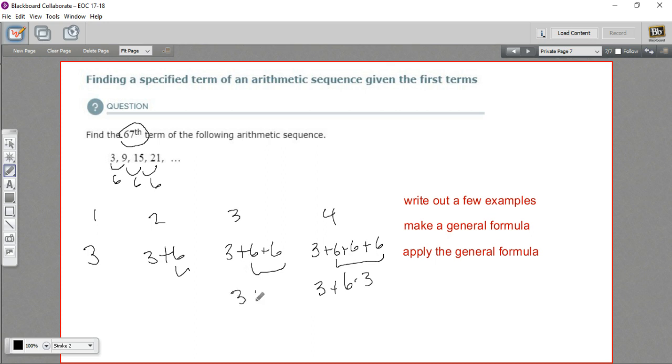This is really 3 plus 6 times 2. This is 3 plus, and actually, I'm going to write that as 6 times 1. I mean, that's the same as 6, right? And this, I'm going to write as 3 plus 6 times 0 because 6 times 0 is 0. So 3 is 3 plus 6 times 0.